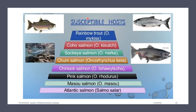These are the susceptible hosts for IHN, which include rainbow trout, coho salmon, sockeye salmon, chum salmon, Chinook salmon, pink salmon, masu, and Atlantic salmon.